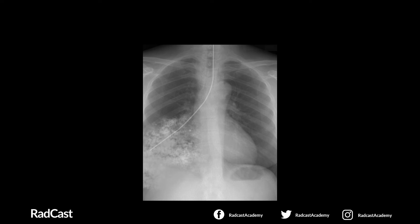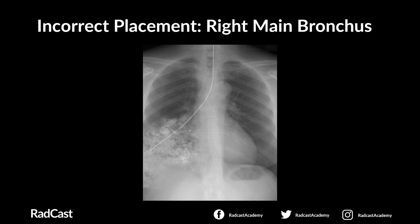With the next chest x-ray, after confirming patient details and viewing field: step one, is the NG tube descending in the midline? Yes. Step two, is it clearly bisecting the carina or bronchi? No — it is passing into the right main bronchus into the right lung. It appears the patient has unfortunately been fed through this incorrectly placed tube, and you can see material in the right lung. This is an incorrectly placed NG tube in the right main bronchus.